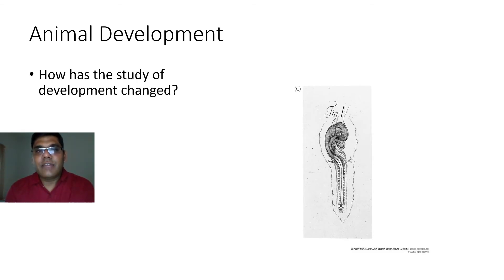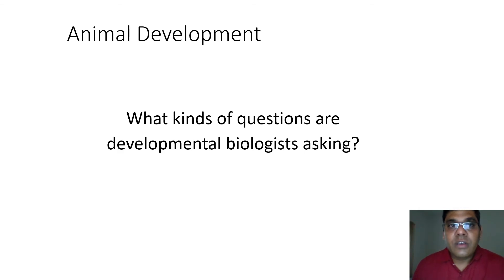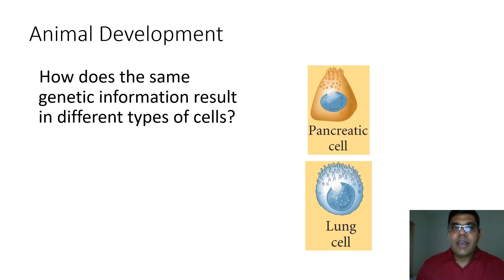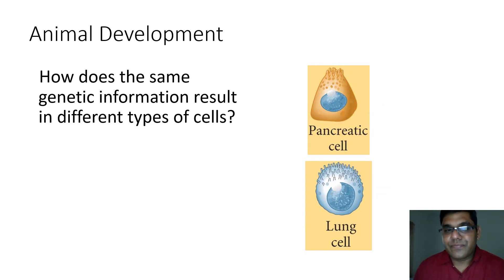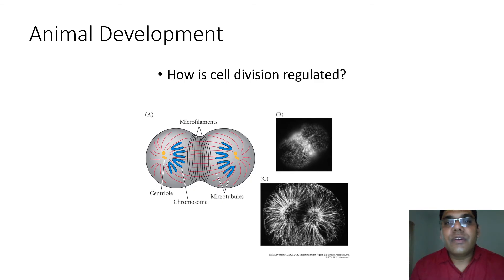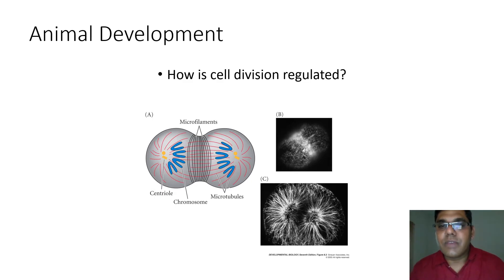In the case of animal development, how has the study of development changed over the years? What kind of questions was developmental biology asking at particular points in time? How does the same genetic information result in different types of cells — like how a pancreas cell could be different from a lung cell? And how is cell division regulated — mitosis versus meiosis, for example?